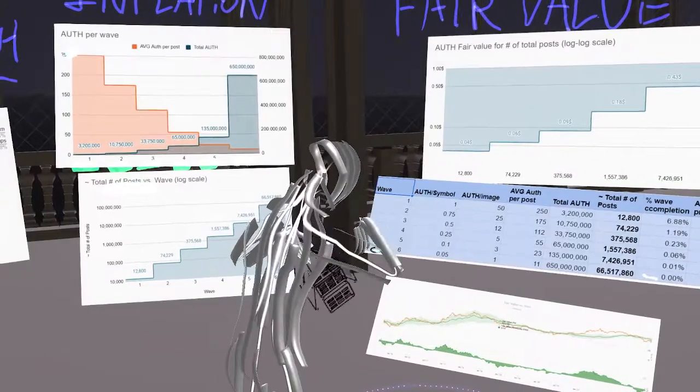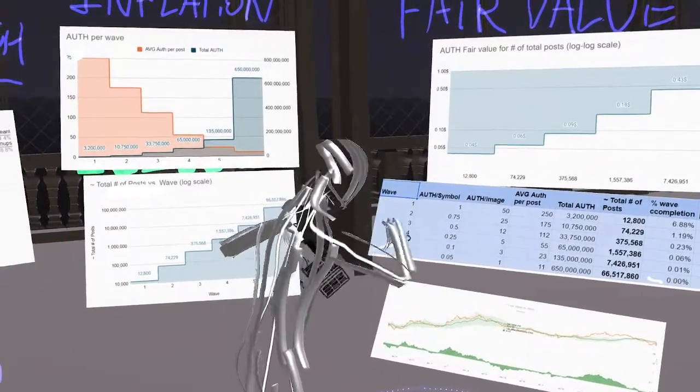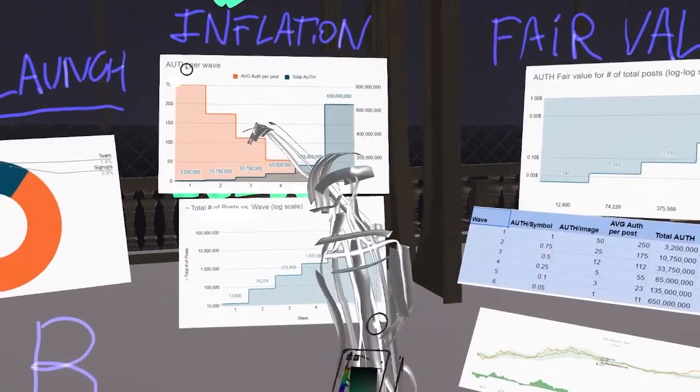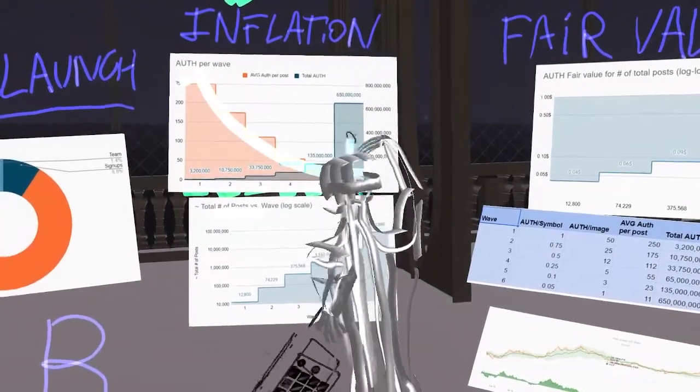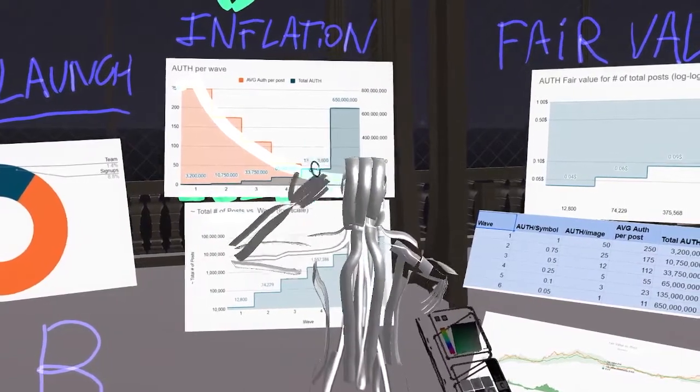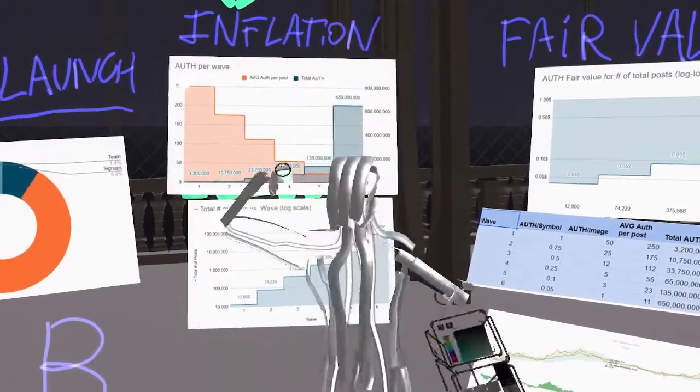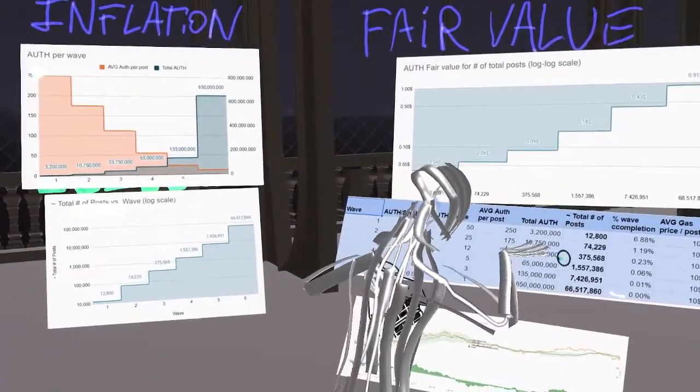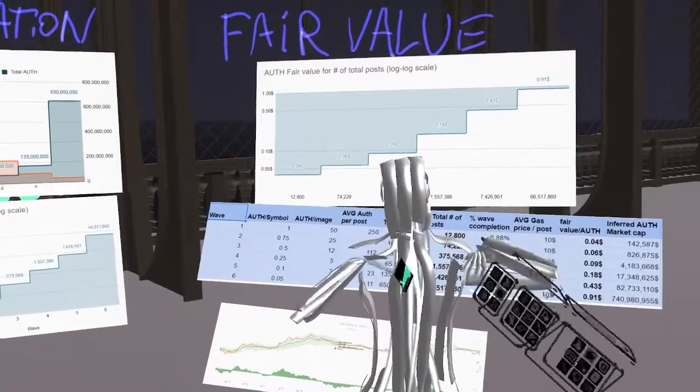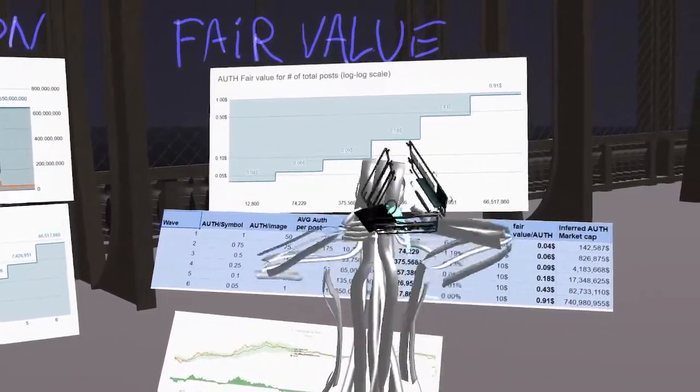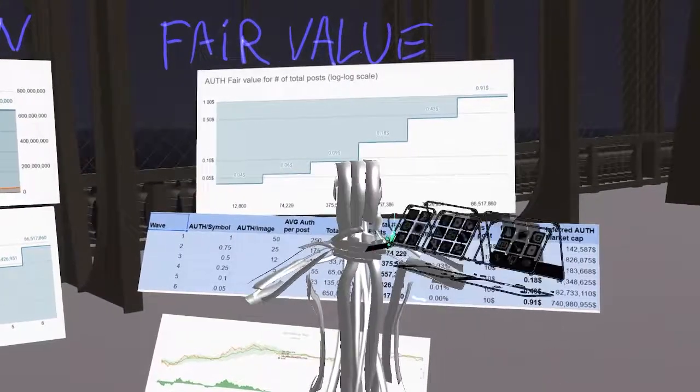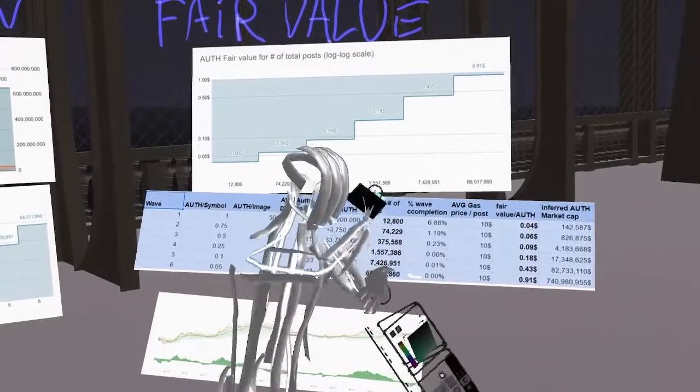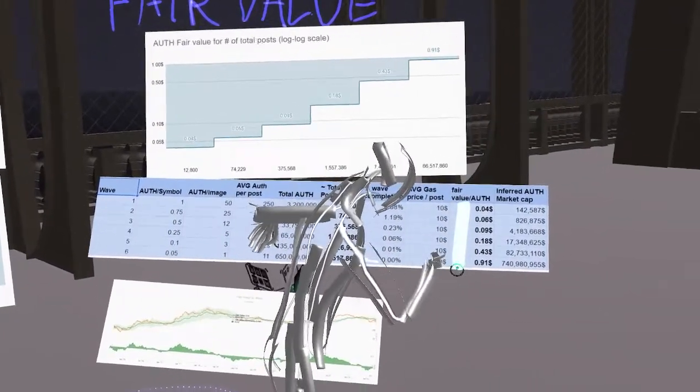Here is the calculation. We have the different waves and we have the different auth that we mine per post. Remember, the auth that you mine per post is going to decrease over time. So this means that mining auth is going to be more and more expensive over time. So we can calculate this. Assuming an average gas price of ten dollars per post, which might fluctuate a lot but we're taking averages here. So assuming an average gas price of ten dollars per post, this is the fair value that we get over time.